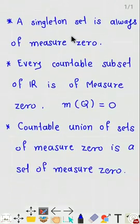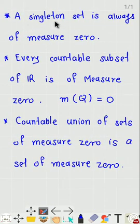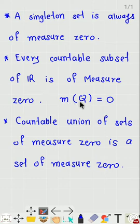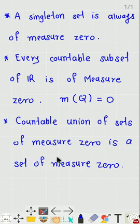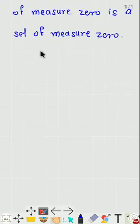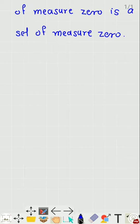Points to note: first, a singleton set is always of measure zero. Second, every countable subset of the set of real numbers is of measure zero. For example, the set of rational numbers is a countable set and its measure is zero. Also, a countable union of sets of measure zero is a set of measure zero. All these points are very important to note down.